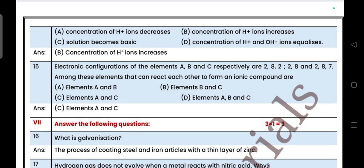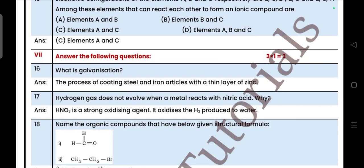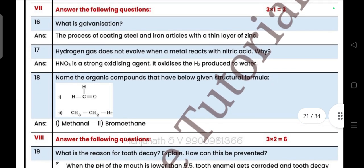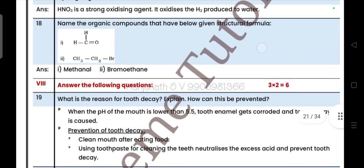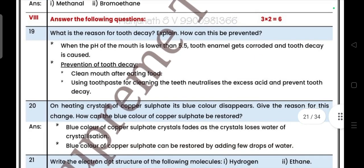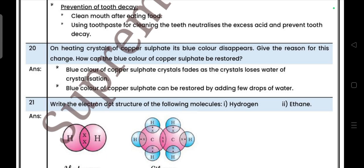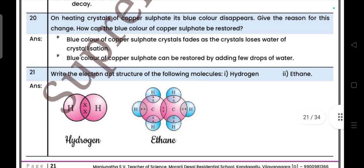Next one, what is galvanization? Three one mark questions. Hydrogen gas does not evolve when metal reacts with nitric acid, why? Name the organic compounds that have the structure given below. First one is methanol, second one is bromoethane. Now come to next question. What is the reason for the tooth decay? Explain how can this be prevented. I'm not explaining answers here. Heating crystals of copper sulfate, its blue color disappears. Give the reason for the change. How can blue color of copper sulfate be restored? Next one, write the electron dot structure of the following molecules, hydrogen and ethane.